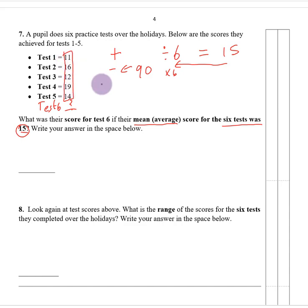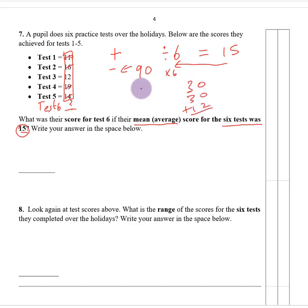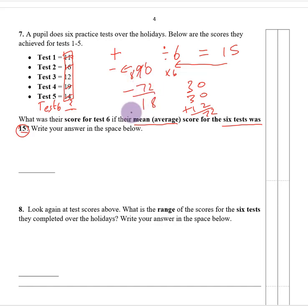19 add 11 gives 30, 16 add 14 gives 30, plus 12 gives 72. So 90 take away 72: 0 from 2 we cannot do, borrow — 10 from 2 is 8; 8 from 7 is 1. So the test score she needs in test 6 for the mean average to be 15 is 18.